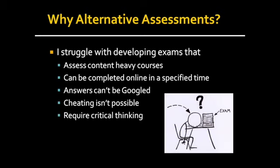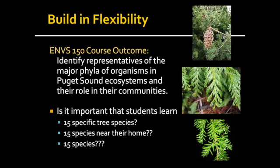I still didn't know how to do that when we swapped to online in spring quarter. So what I wanted to do was build in some flexibility in my courses to assess course outcomes. I'm going to talk about two classes I taught in spring: Environmental Science 150, which is Puget Sound Ecology, and Marine Biology 150. In Environmental Science we have a course outcome to identify representatives of major phyla of organisms in Puget Sound ecosystems and their role in their communities.